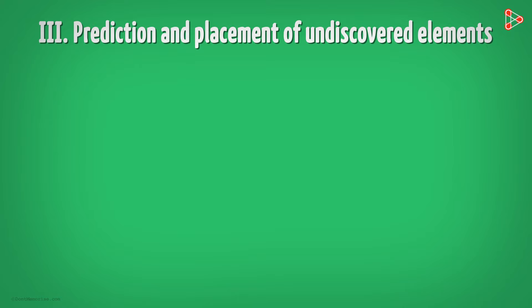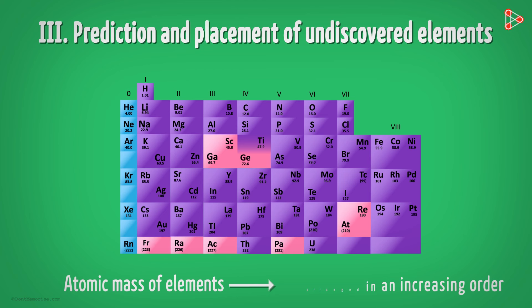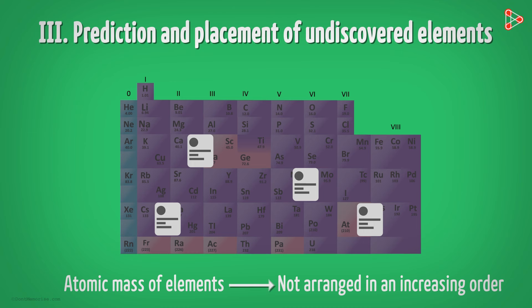Lastly, we have the prediction and placement of undiscovered elements. The previous table by Mendeleev was based on atomic masses of elements. However, the atomic masses of elements were not arranged in a constantly increasing order. Hence, if newly discovered elements were to be placed in the table, then their position would be confusing. But why?